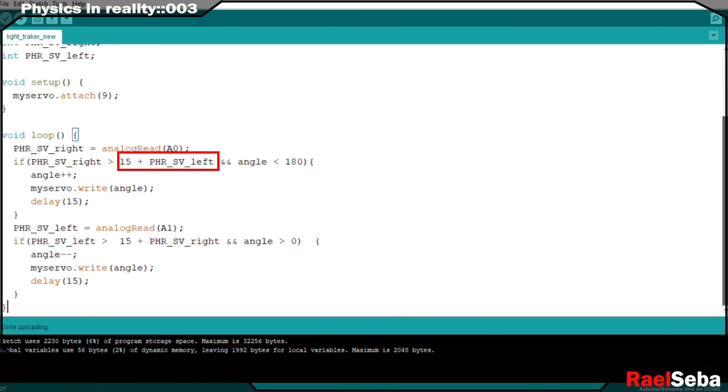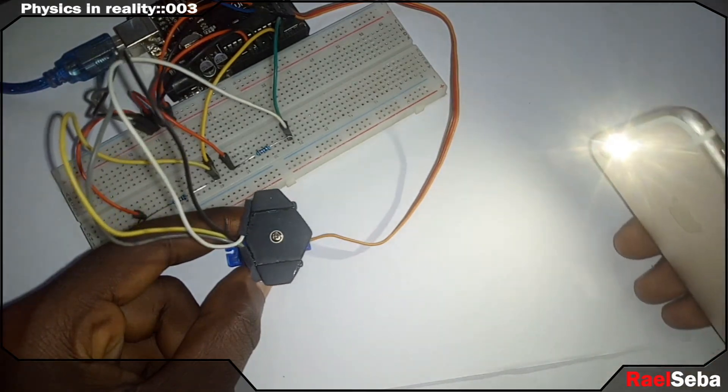So I added 15 to the left sensor value in the first if statement, and also to the right sensor value in the second if statement. And it works perfect after uploading.